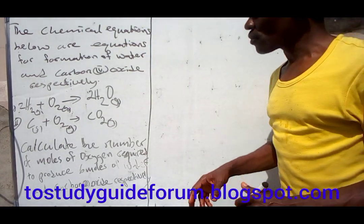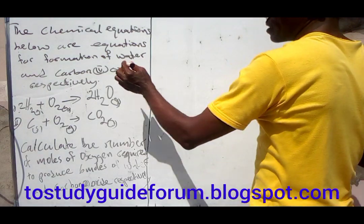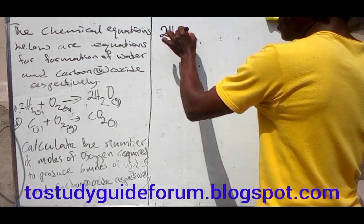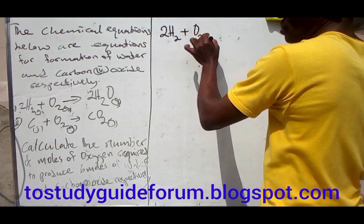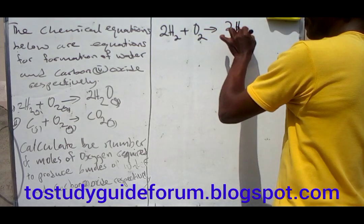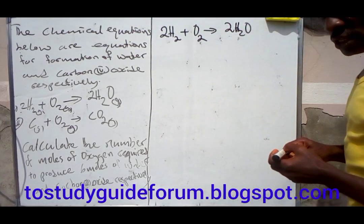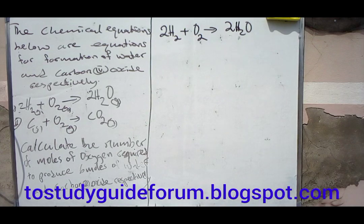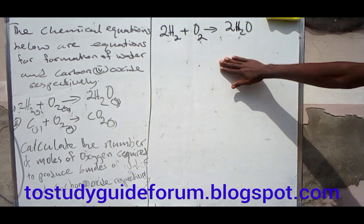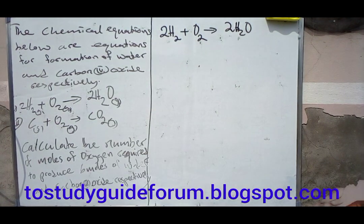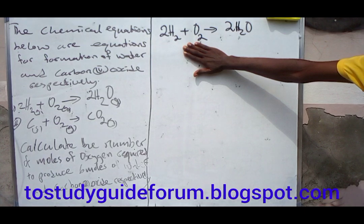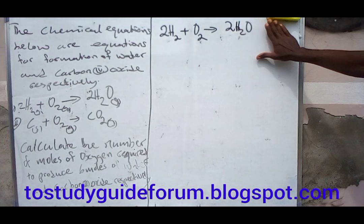From this chemical equation we find the equation for the formation of water. In this case, what we are looking for is the number of moles of oxygen molecules that are required to produce six moles of water.